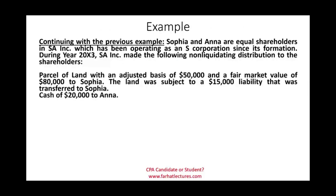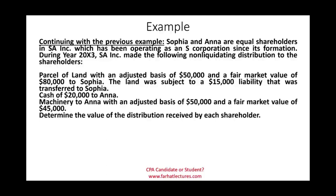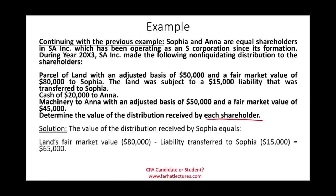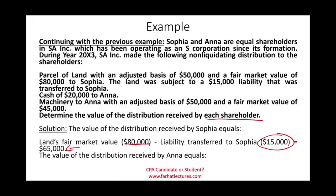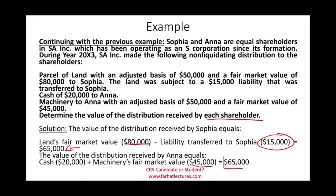Continuing with the prior example, let's determine the value of the distribution received by each shareholder. For Sophia: she received land with a fair market value of $80,000, minus a $15,000 liability, giving her an amount realized of $65,000. For Anna: $20,000 cash plus a fair market value of the machinery of $45,000, also totaling $65,000. Notice the distributions are the same for both — they're equal shareholders, so you want to treat them equally.